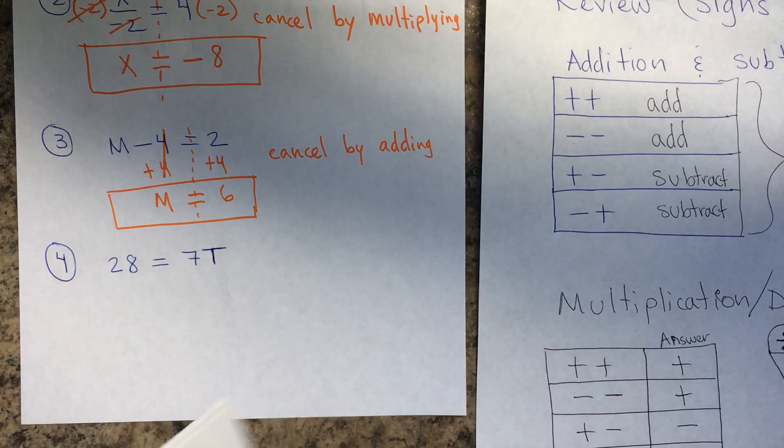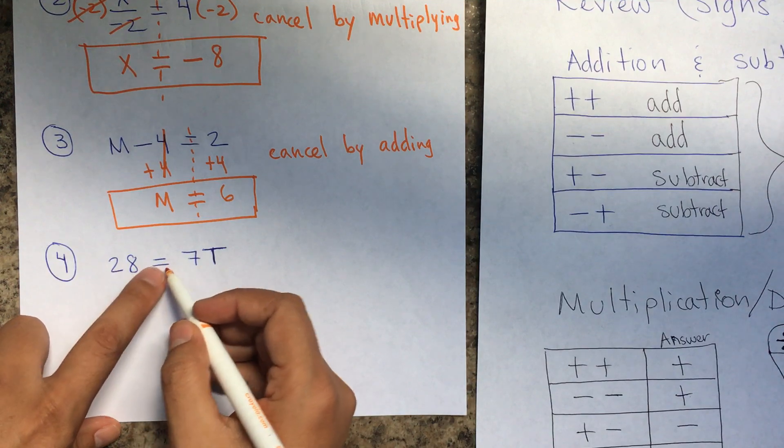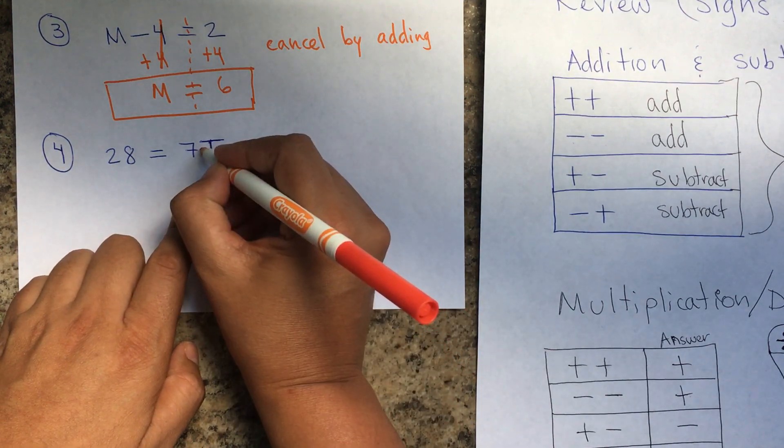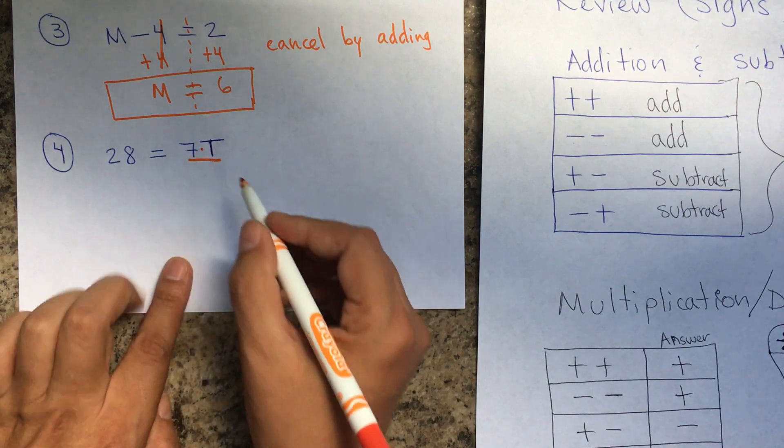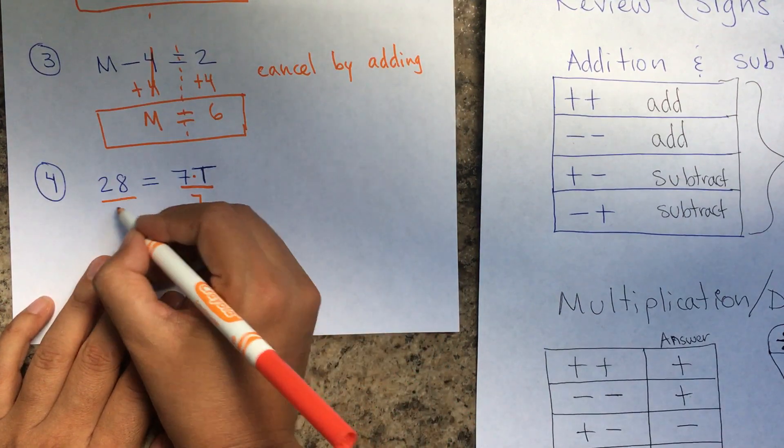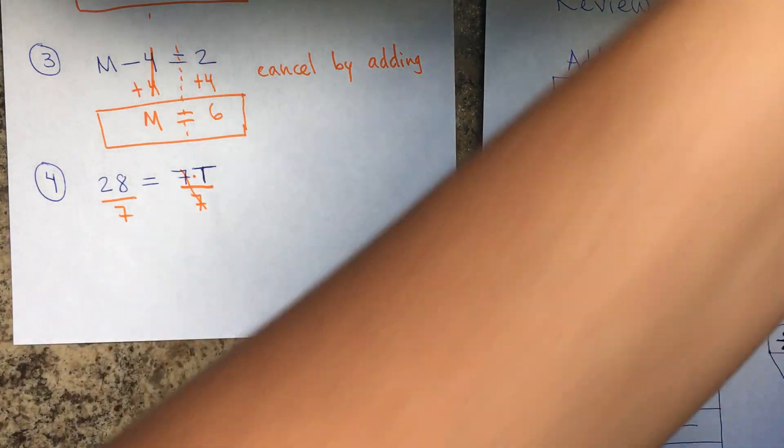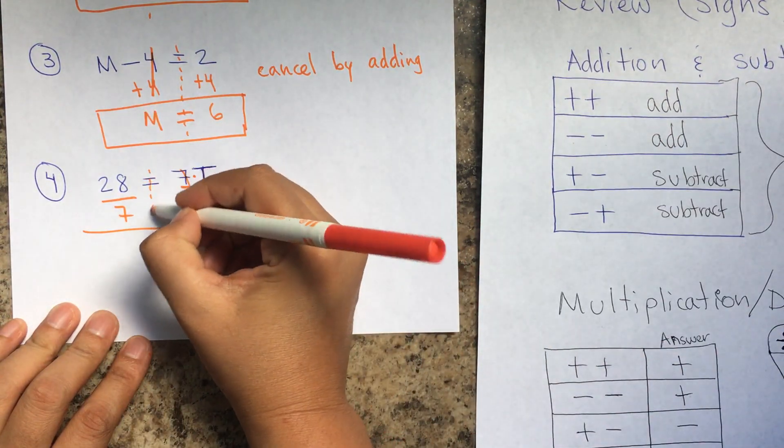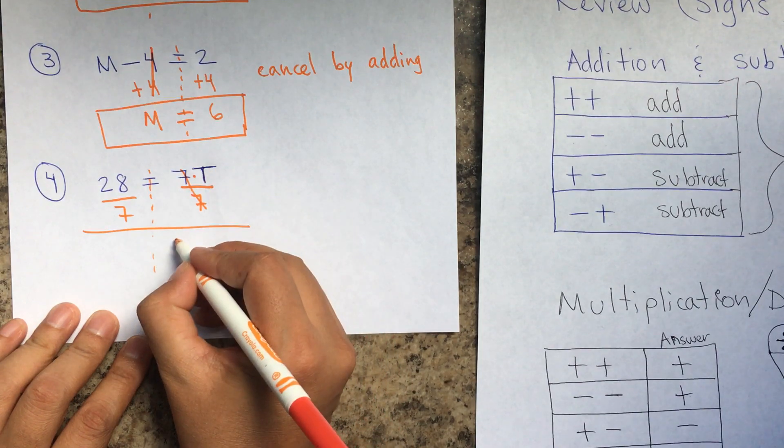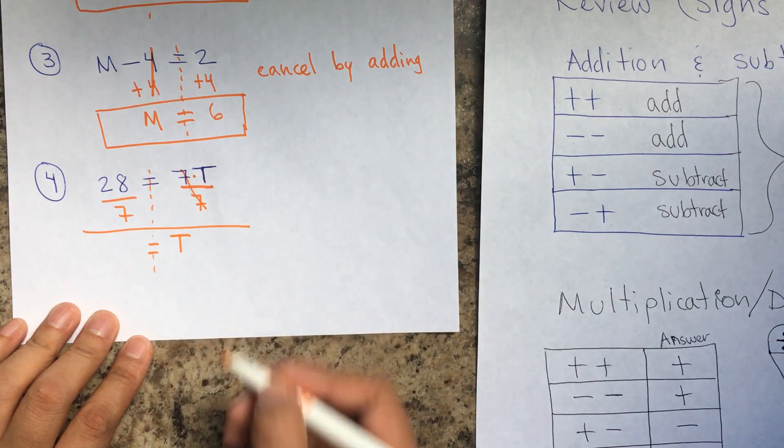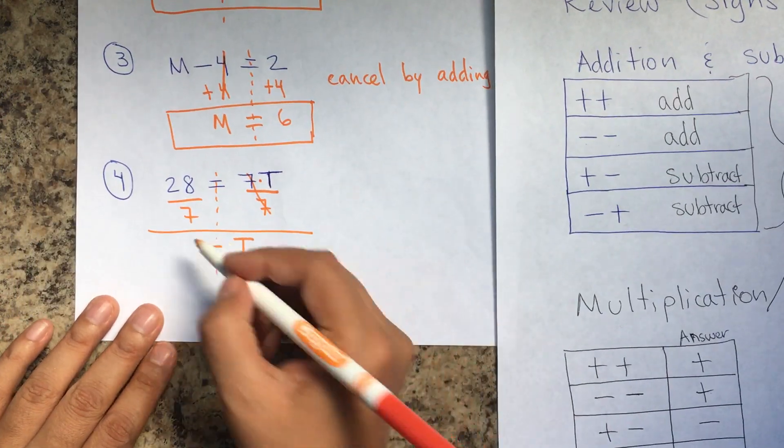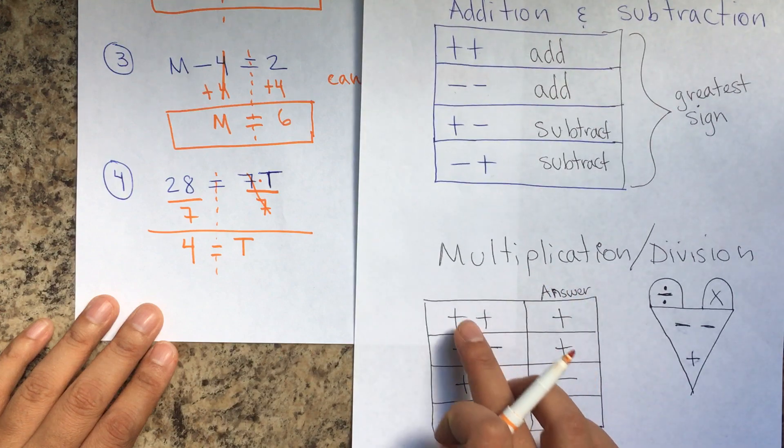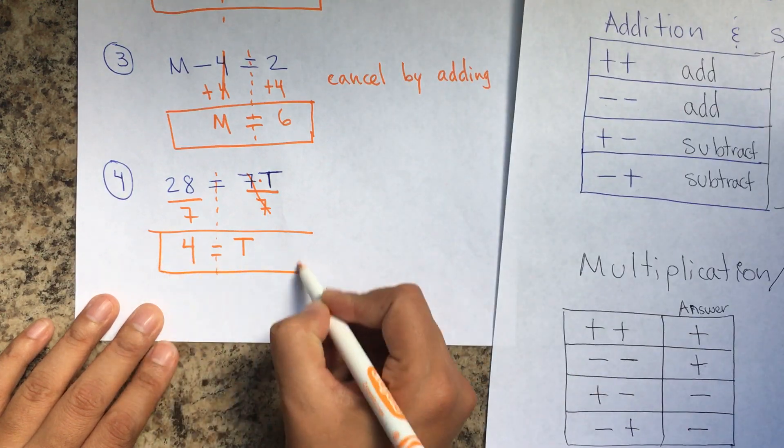The next one is 28 equals 7t. I want to leave t by itself. So if I'm multiplying, remember that if you have a number and a variable, that means multiplication. The opposite is to divide by 7. I divide. And so, this cancels, look at 7 divided by 7 is 1t. I don't need to put the 1. I already know that the 1 is in there. And 28 divided by 7 equals 4. Again, positive divided by positive, that's division. So I'm going to use this one. Positive divided by positive is positive.